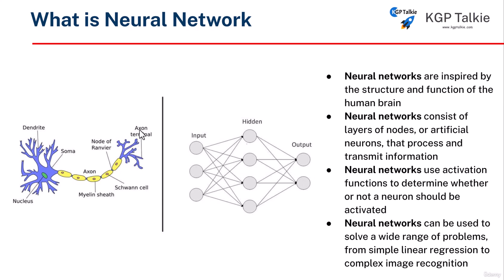As you see, the axon terminal can be connected to multiple neuron dendrites. That means a single neural network unit can be connected to multiple units.